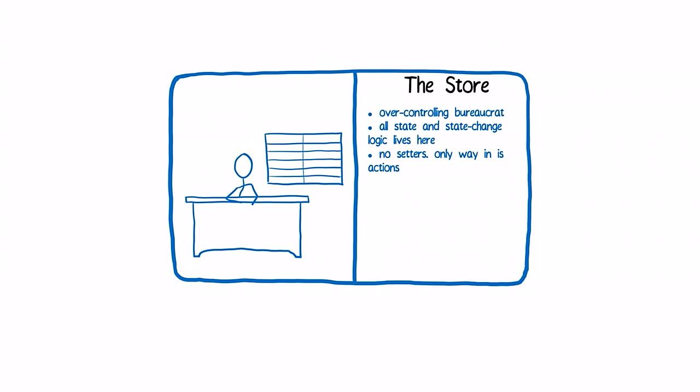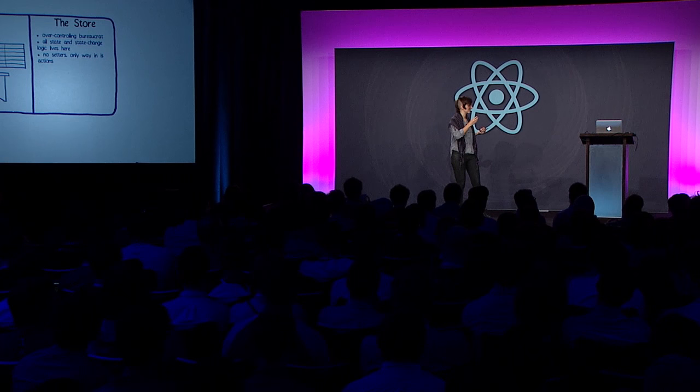That brings us to the store. I think of the store as basically an over-controlling bureaucrat. All state and state change logic live on the store, and there are no setters. There's no way for the view to come to the store and say, 'I need you to change X, Y, and Z.' Instead, what the store is basically saying is: no one's going to change this data besides me. And if you want me to change it, you're going to have to go through the official channels — through this action pipeline from the action creator to the dispatcher to the store.